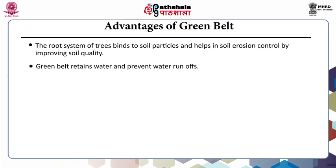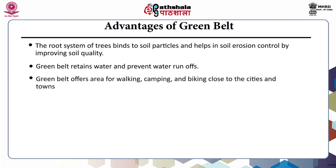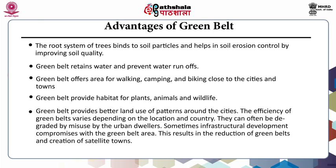The root system of trees holds soil particles and helps in soil erosion control by improving soil quality. Greenbelt retains water and thus prevents water runoff. Greenbelt offers areas for walking, camping and biking close to cities and towns, provides habitat for plants, animals and wildlife, and provides better land use patterns around cities. However, the efficiency of greenbelt varies depending on location and country, and they can be degraded by misuse by urban dwellers or compromised by infrastructural development, resulting in reduction of greenbelts and creation of satellite towns.